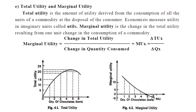Another concept to understand before studying the theory of consumer behavior is total utility and marginal utility. Total utility is the amount of utility derived from consumption of all the units of a commodity at the disposal of the consumer. That is, whatever number of units the consumer consumes, the utility derived from consumption of all those units is called total utility. It is the summation of all the utilities derived.